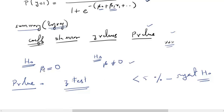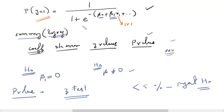Similarly, we apply the same hypothesis test to other independent variables, such as beta_1. The null hypothesis states that beta_1 equals zero, meaning x1 is insignificant to the logistic regression model — changing the values of x1 will not influence the probability of y equal to 1. This holds only if beta_1 equals zero. The alternative is beta_1 is not equal to zero. We find a p-value using a z-test, and if p-value is less than 5%, we reject the null hypothesis, proving that x1 is significant.